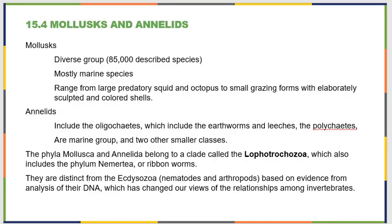Section 15.4 is all about mollusks and annelids. When we talk about mollusks, it's a very diverse group of animals, usually marine, ranging from large predatory squids and octopi to tiny little garden snails. For annelids, we consider organisms like earthworms, leeches, and polychaetes — a lot of them are marine, though earthworms live in soil. We study them together because they are both part of clade Lophotrochozoa. They are distinct from the Ecdysozoa due to DNA analysis and differences in how they grow.